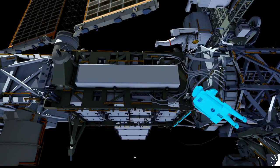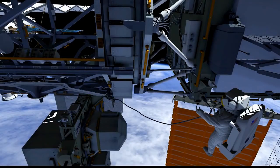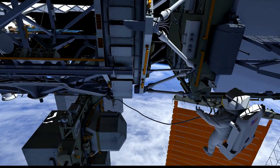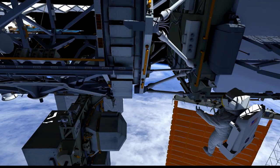We'll then have Scott head forward. He'll remove the P3-P4 jumper across the SARJ. Once this is removed and stowed, we'll be able to rotate the solar alpha rotary joint again at the end of the EVA.